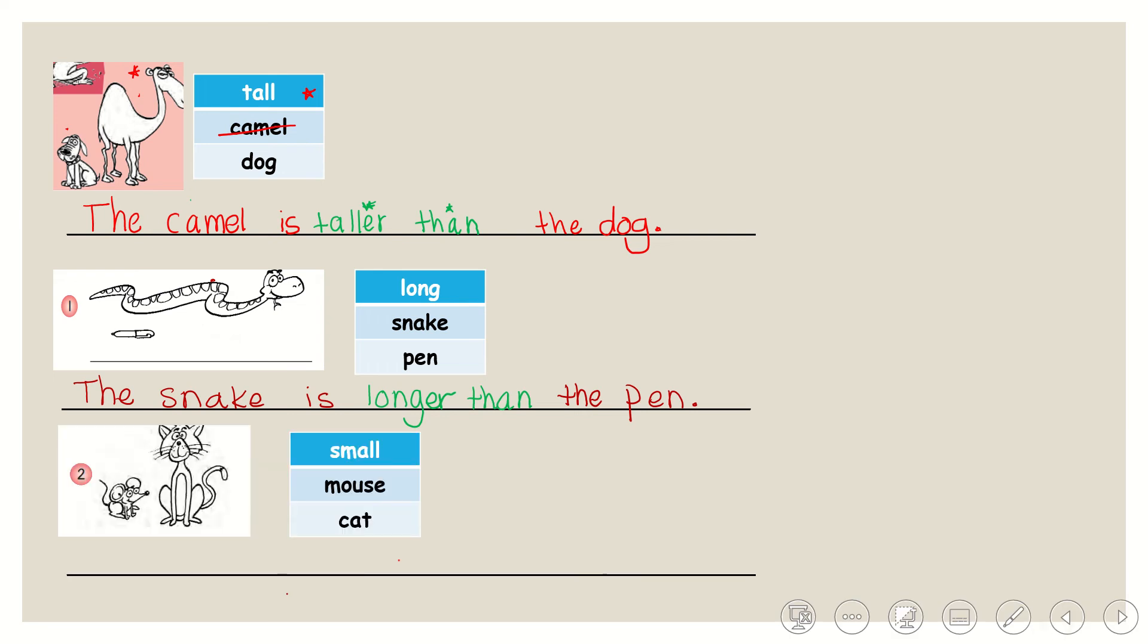Let's see the other sentence. We have small, mouse and cat. Where is the mouse? Here is the mouse. Here is the cat. And we have small. Who is small here? The cat or the mouse? Who is small? The mouse. So the mouse takes the adjective. We start with the mouse. The mouse is what? Help me. What?